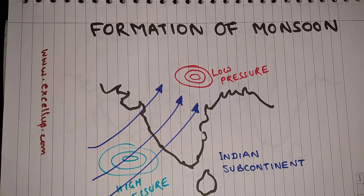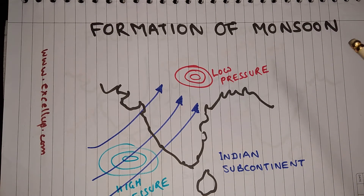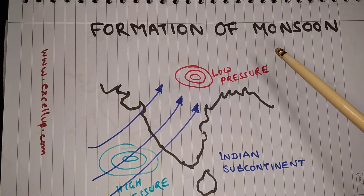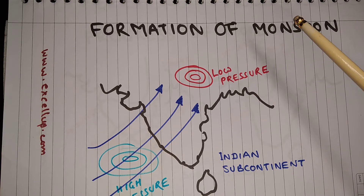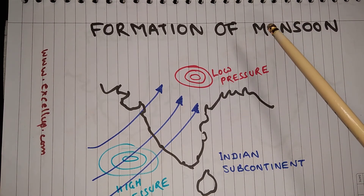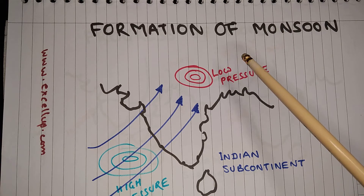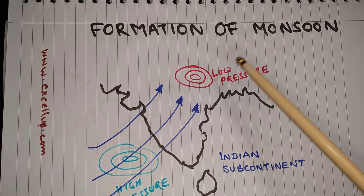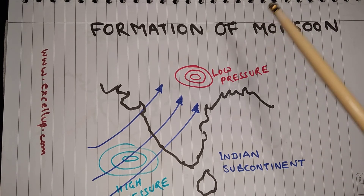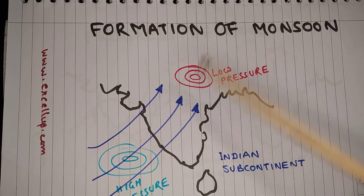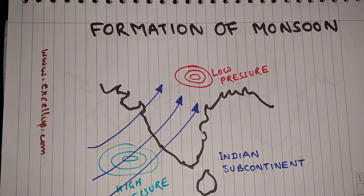I will try to explain it in the simplest possible way. This map shows the Indian subcontinent. The northern part of India becomes too hot in the months of May and June — that is the summer season. Higher temperature propels warm air to rise up, and this creates a region of low pressure towards the north.